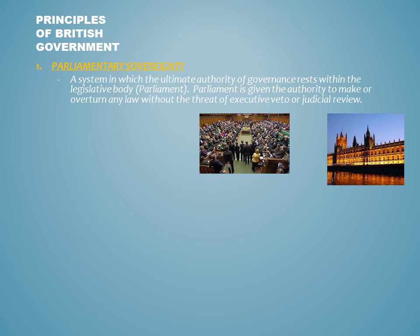For anyone who is seeking to understand British policymaking, there is no more important or long-standing principle of British government than that of parliamentary sovereignty, also referred to by some as the Westminster model of government, referring to the meeting place of the UK Parliament. Parliamentary sovereignty is a system in which the ultimate authority of policymaking rests within the hands of the legislative branch. Parliament is given the ultimate authority to make or overturn any law without the threat of a check from an executive veto or judicial review.